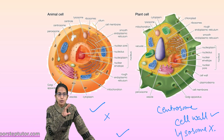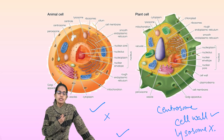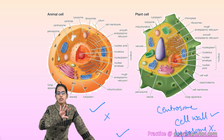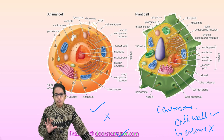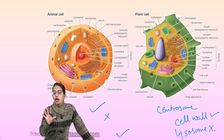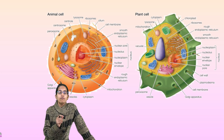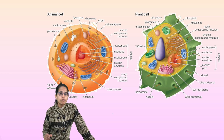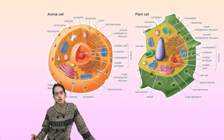Cytoplasm fills the entire space in the animal cell, within which we have the various cell organelles. The nucleus is located in the center of the animal cell; however, in plant cells, the nucleus is shifted to the side because the vacuole occupies the predominant position. An important question for your objective exams: which organelles within the cell are double membrane, which are single membrane, and which do not have a cell membrane.